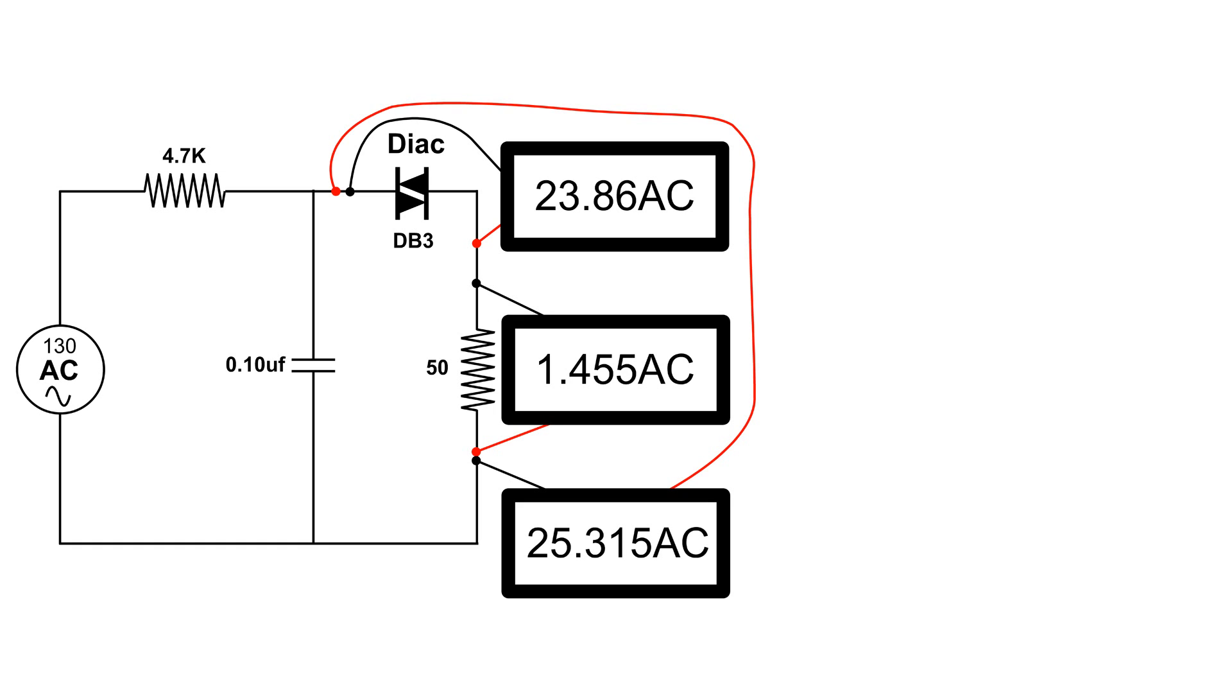And then from the DIAC to the other side of the AC, or if you look closely, that's actually across the 0.1 microfarad capacitor. It reads a little bit more than 25 volts.